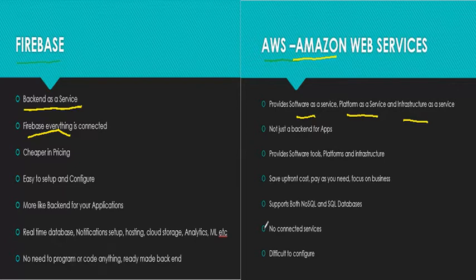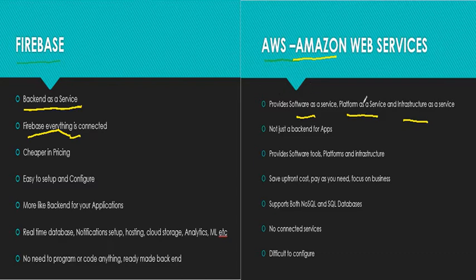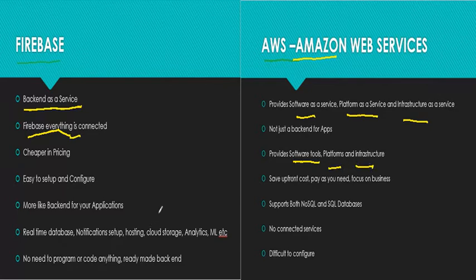When you want to deploy and distribute your apps to users, you can have all of that on Amazon Web Services. You can also have distribution services on Firebase, but you don't have platform-as-a-service or software tools as a service in the Firebase cloud. So Amazon provides software tools, platforms, and infrastructure — it provides everything — whereas Firebase is just a backend-as-a-service.